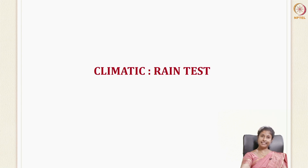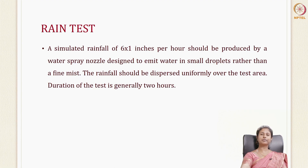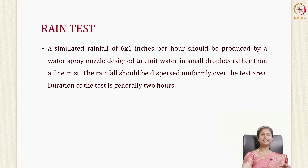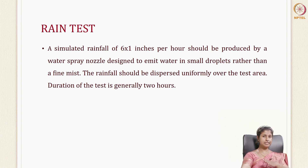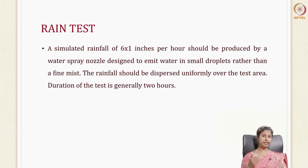Now that we have completed all the mechanical tests, let's move on to the climatic transport worthiness tests. The rain test is one of the most important climatic tests. Just like rain encountered in the real system, in the laboratory you produce a simulated rainfall of 6 to 1 inches per hour, produced by a water spray nozzle designed to emit water in small droplets rather than a fine mist. This should be uniformly distributed throughout your packaging material, and it is usually done for 2 hours to observe whether water is absorbed, reaches the contents, or spoils them.